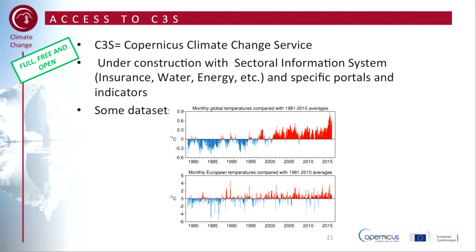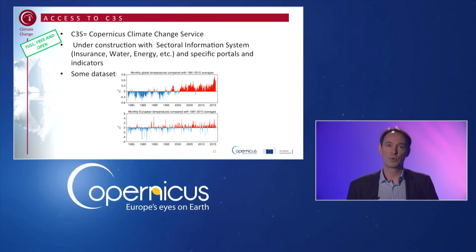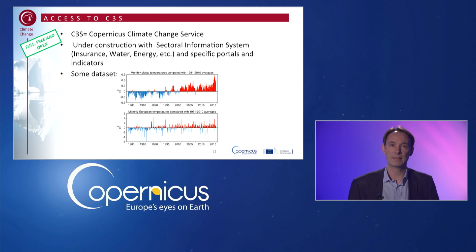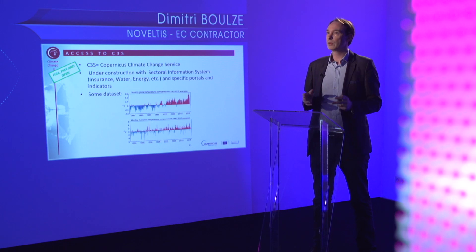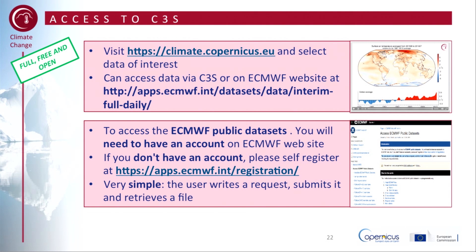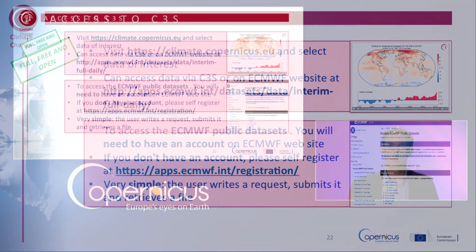C3S stands for the Copernicus Climate Change Service. It aims to provide contributions to challenging questions such as: How is the climate changing? How will climate change be in the future? How will it impact society? C3S is in a pre-operational phase of development with an approach of sectoral information systems — such as water, insurance and energy — to implement a robust monitoring and analysis service of the Earth's climate by 2018. C3S delivers seasonal forecasts and climate predictions by holding records on temperatures, rainfall and drought, sea levels and ice sheets. While under construction, some generic datasets are already available through the European Centre of Medium-Range Weather Forecast website.